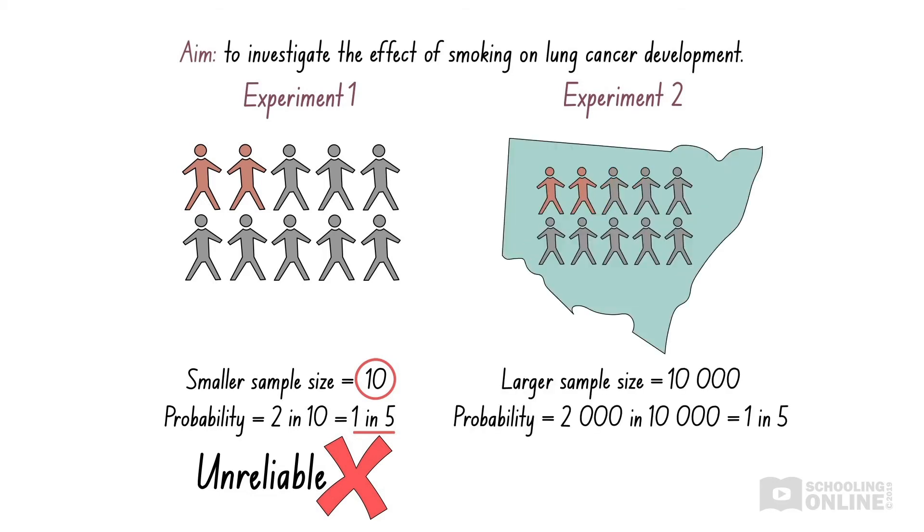Another experiment follows 10,000 smokers, of which 2,000 get lung cancer. While this still represents a probability of one in five, we can be much more certain in these results, since they apply to a much larger number of people. In other words, they apply to a greater sample size.